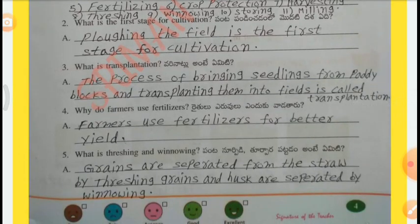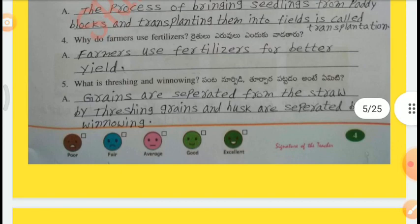Question 3: What is transplantation? The process of bringing seedlings from paddy blocks and transplanting them into the field is called transplantation. Question 4: Why do farmers use fertilizers? Farmers use fertilizers for better yield. Question 5: What is threshing and winnowing? Grains are separated from the straw by threshing; grains and husks are separated by winnowing.